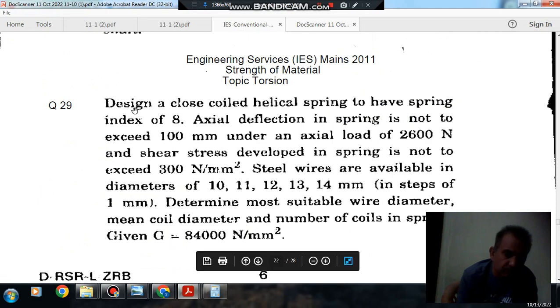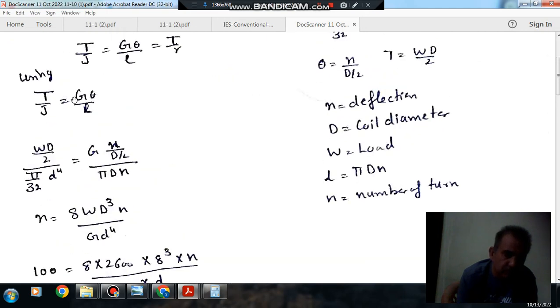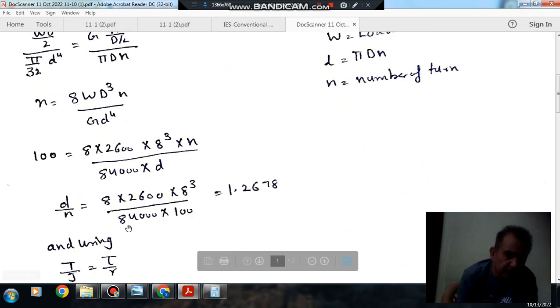Using the first two equations, G will be 84000 and X is 100. So we can calculate d by n, small d by n, it comes out as 1.267.